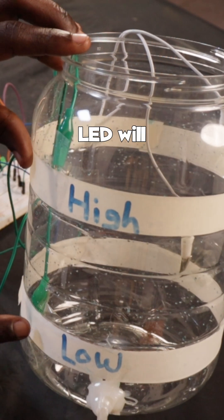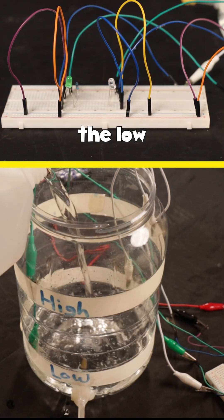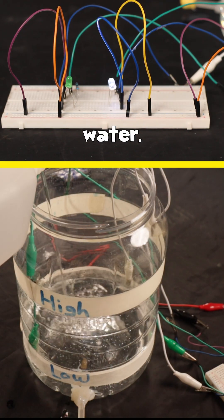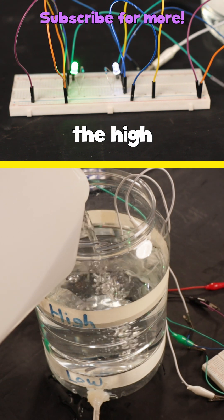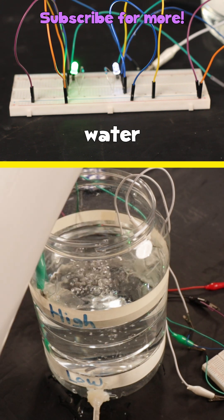Wires from the white LED will indicate the low level of water, while wires from the green LED will indicate the high level of water in the water reservoir.